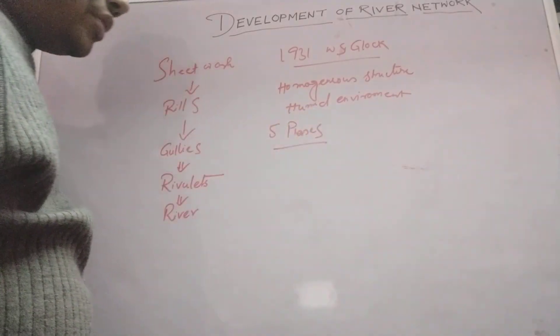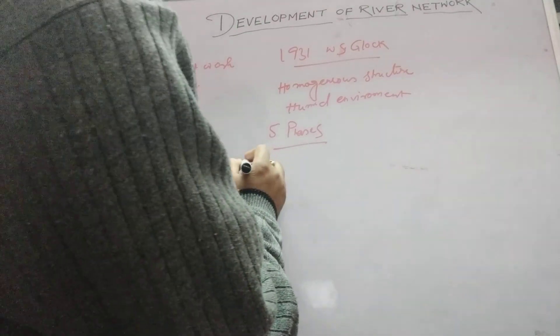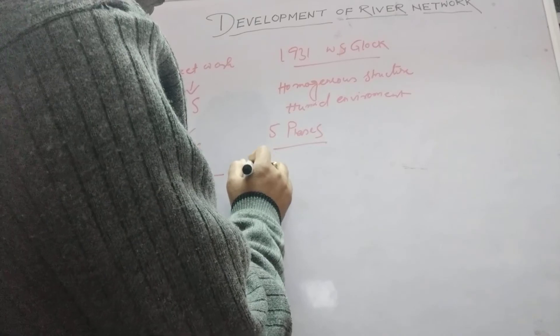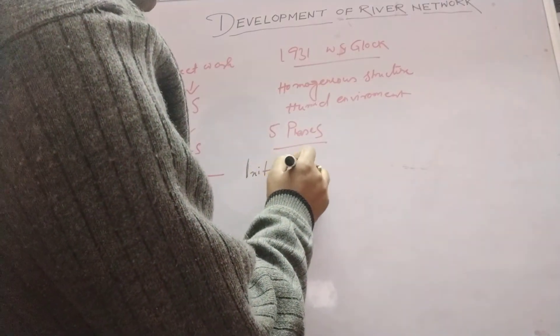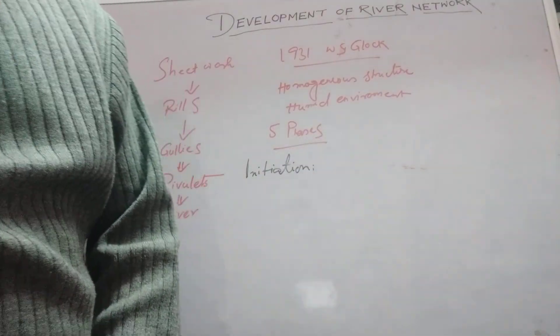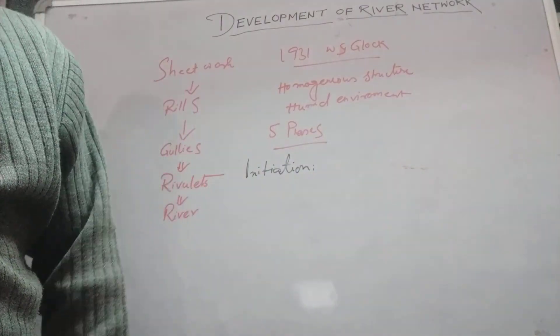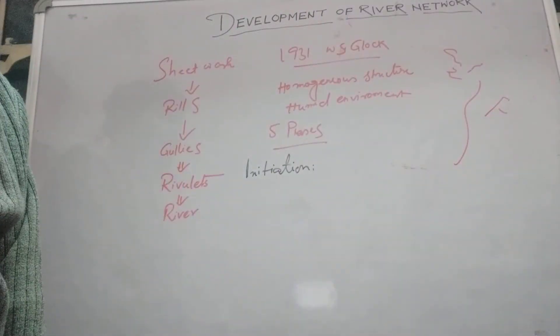What are the five phases? The first one is known as initiation. This is the phase where the skeletal framework of the drainage network is established. This skeletal structure is developed at the first stage.